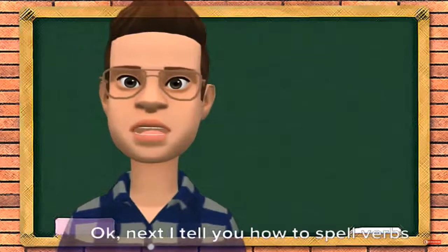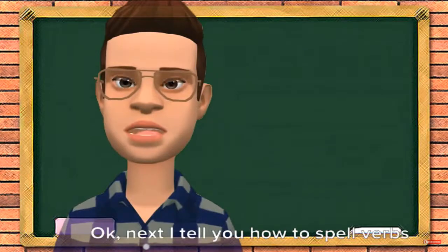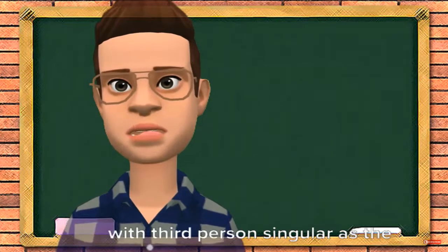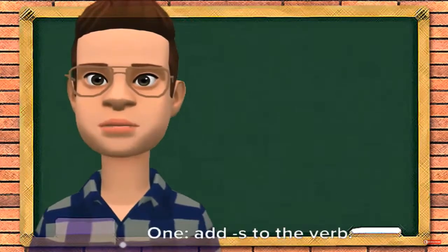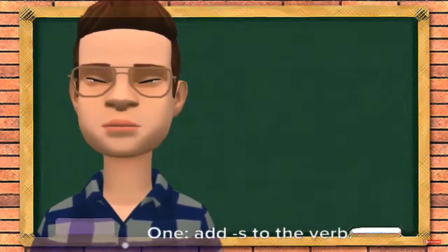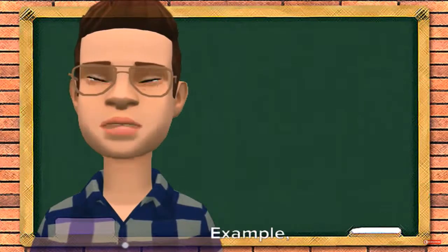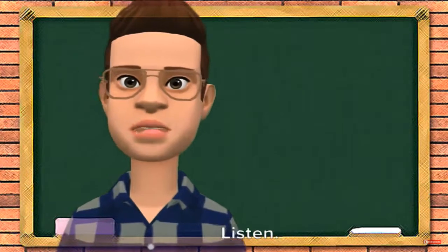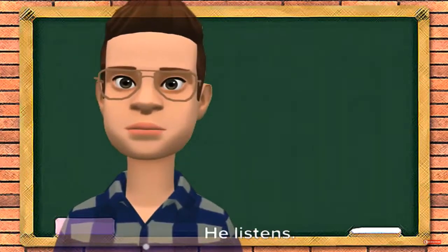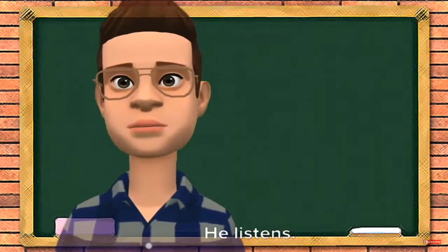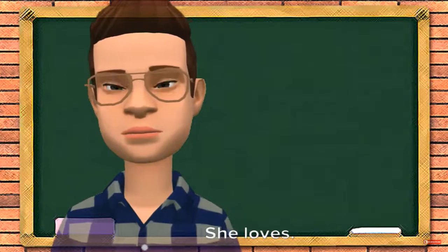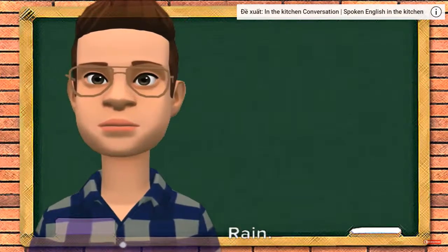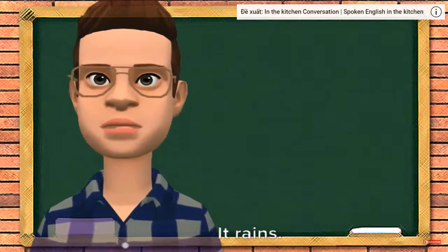Next, I will tell you how to spell verbs with third person singular. One: add S to the verb. For example — listen: he listens; love: she loves; rain: it rains.